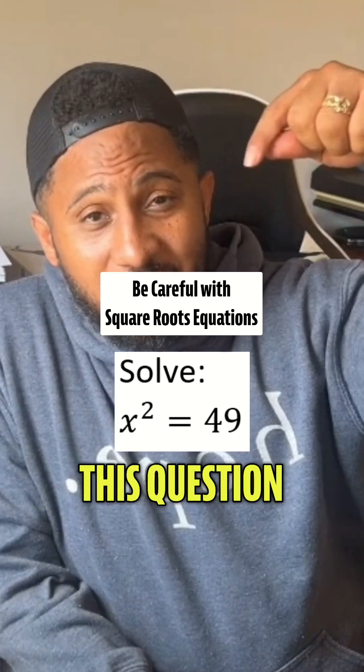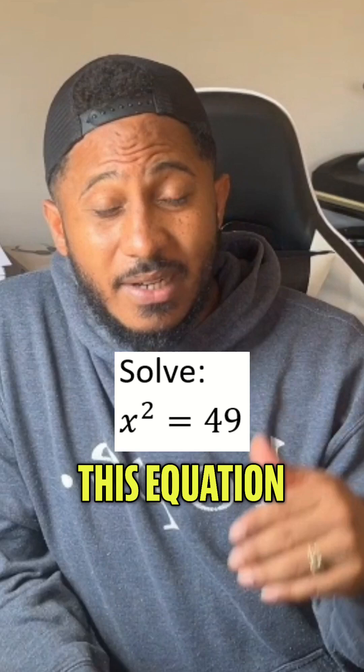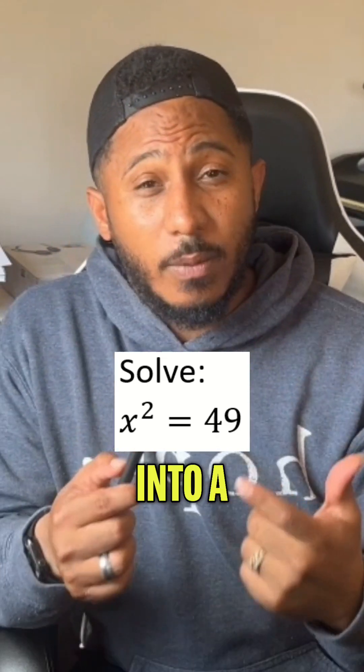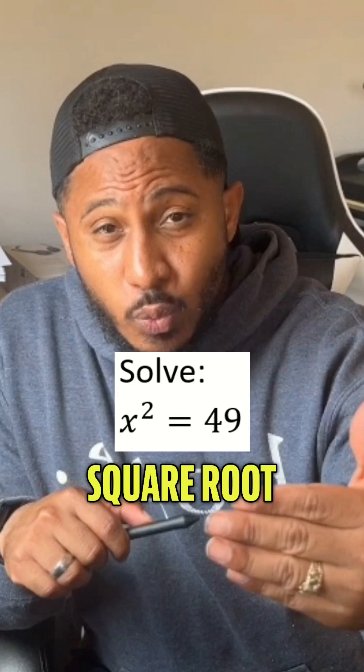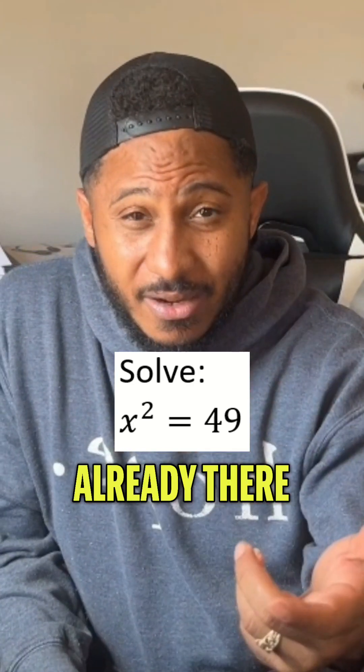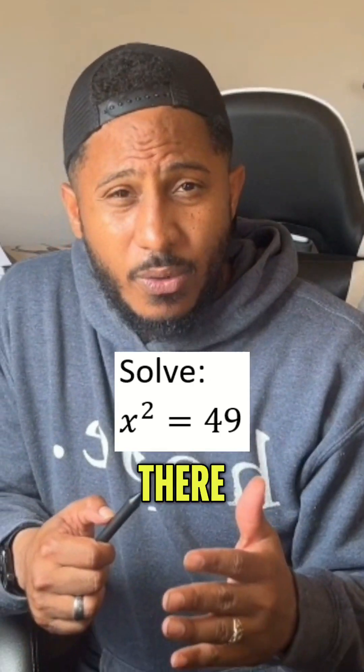Let's answer this question. Here it says x squared equals 49. To solve this equation, we have to square root both sides, which means we have to put our own square root into the problem. When putting our own square root into a problem, we have to include the plus or minus if it's not already there. Whereas if the square root is already there, then we don't put our own plus or minus in there.